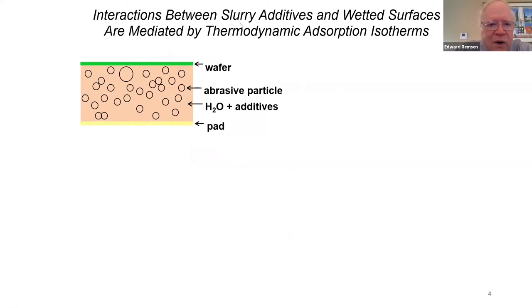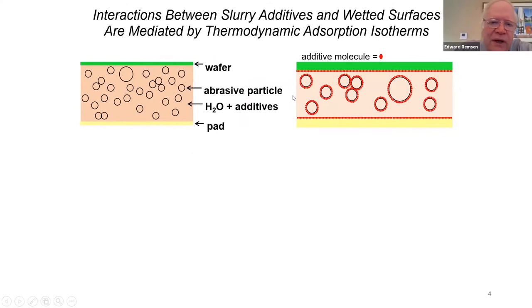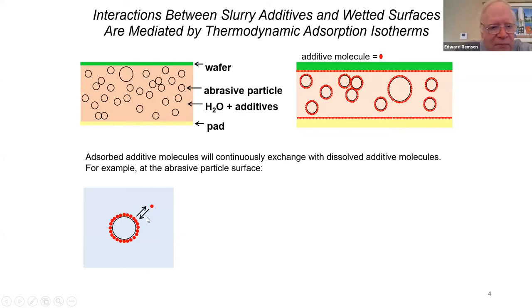I'd like to dwell on the interactions between the abrasive particle and the chemistry inside the slurry, which is quite important. What we see here is a depiction of a wafer in contact with an abrasive slurry and a polishing pad, with the abrasive pushed down against the wafer producing a polishing action. The chemical additives have the opportunity to adsorb at a number of surfaces — at the surface of the wafer, at the surface of the pad, and at the surface of the abrasive particles. Basically, there are all these surfaces of interest where the chemistry can go.